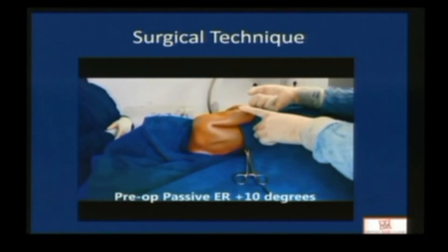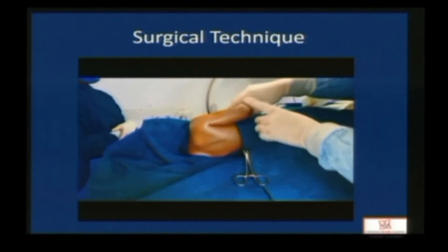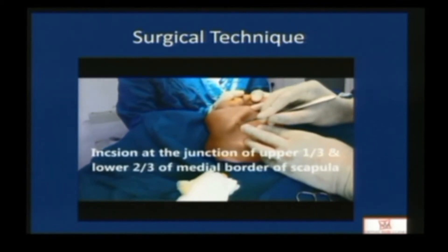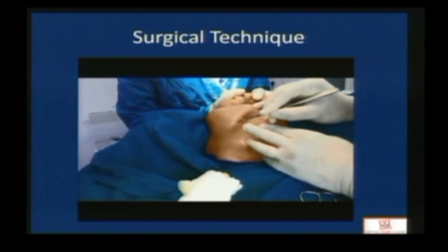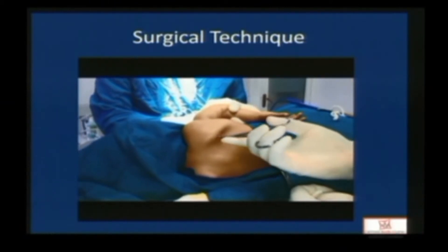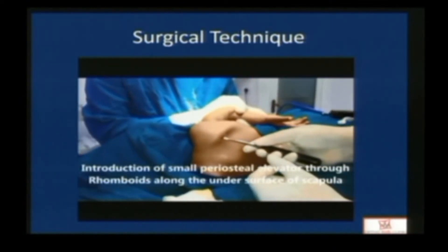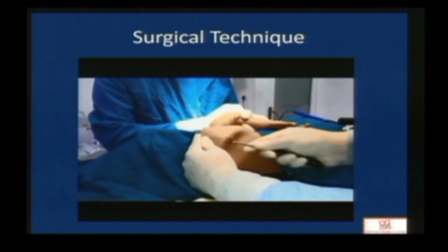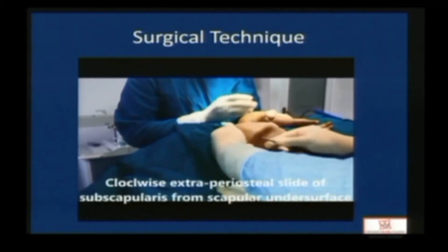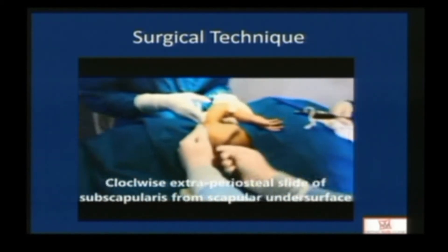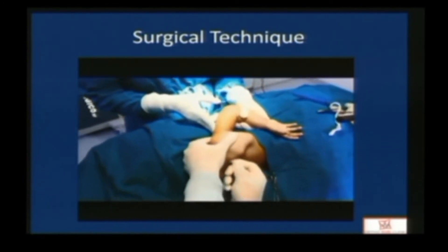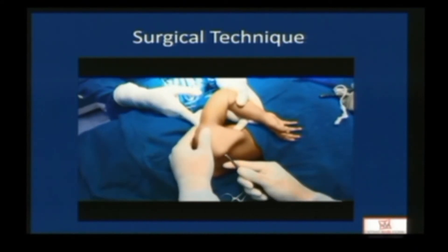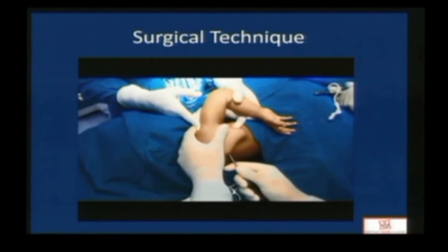The surgical technique involves a lateral position assessing the contracture, turning the arm internally in forward flexion to make the medial border of scapula prominent. An incision is placed at the junction of upper one-third and lower two-thirds. The subcutaneous tissue is widened with an artery forceps, and a small periosteal elevator is introduced through the rhomboids on the undersurface of scapula. Subscapularis is released in a clockwise fashion, followed by a bigger periosteal elevator to release the peripheral harder septas. The anterior soft tissue is then gently stretched over five minutes, and the wound is closed by one suture. This procedure takes only seven minutes.